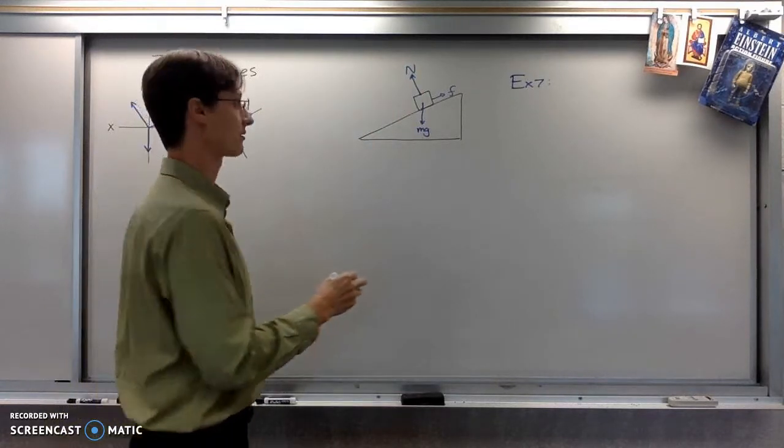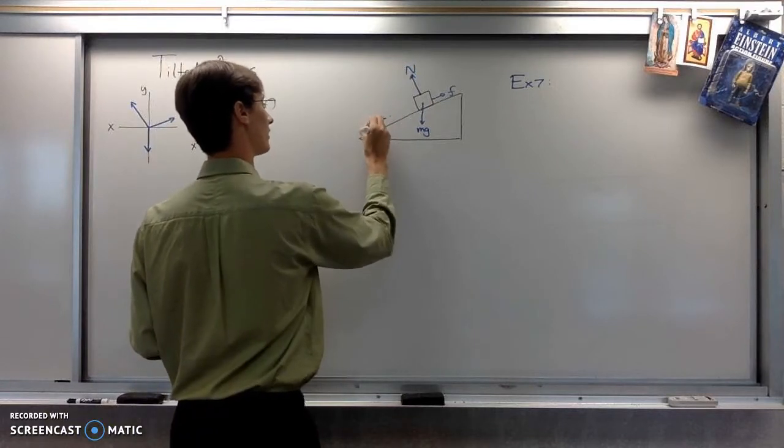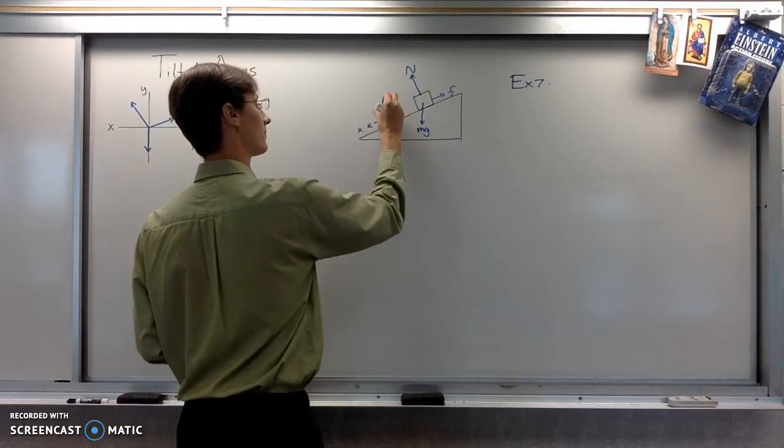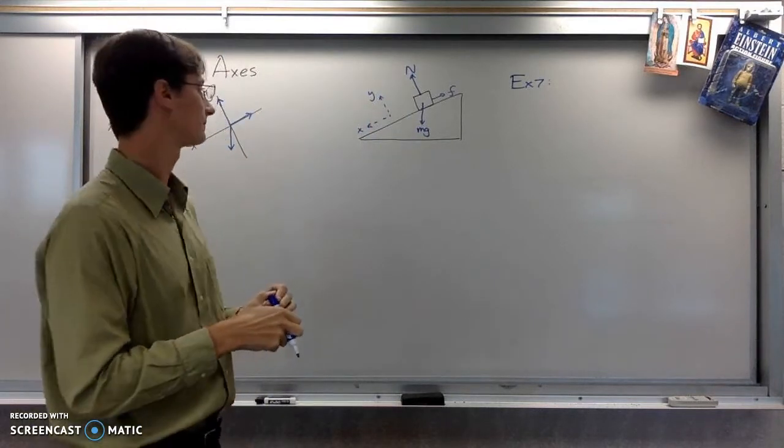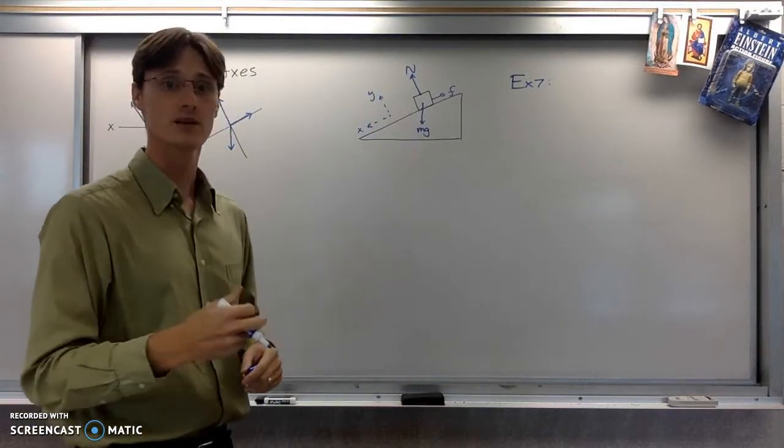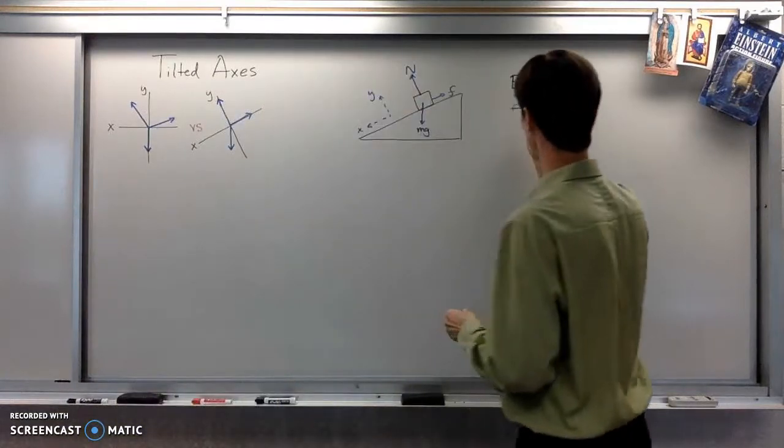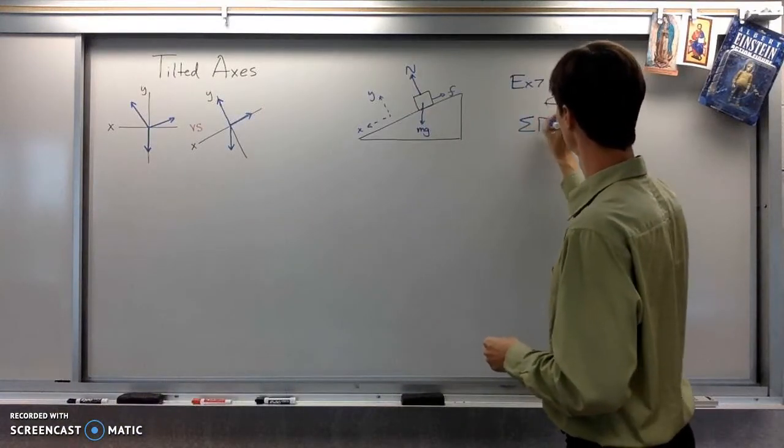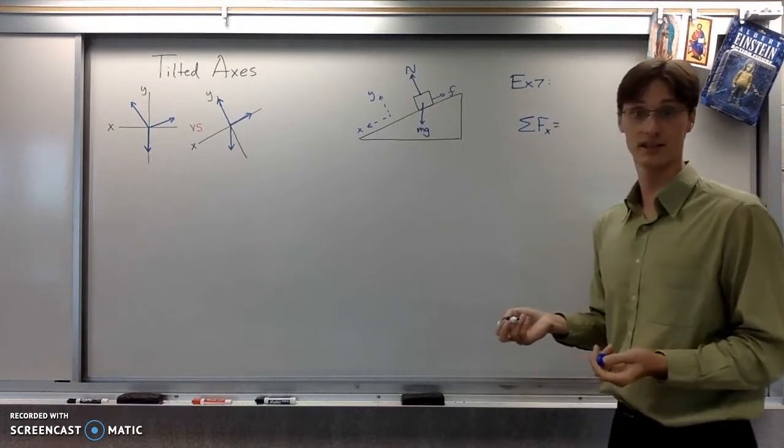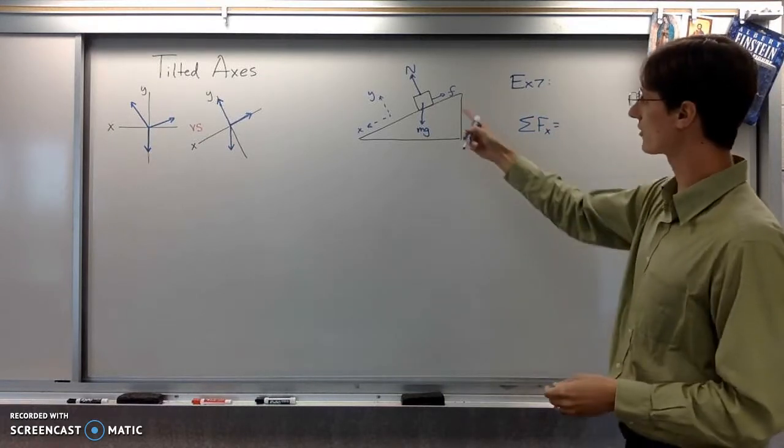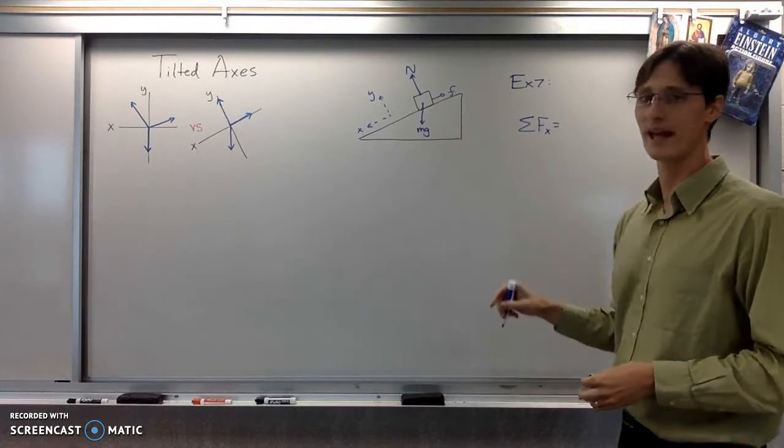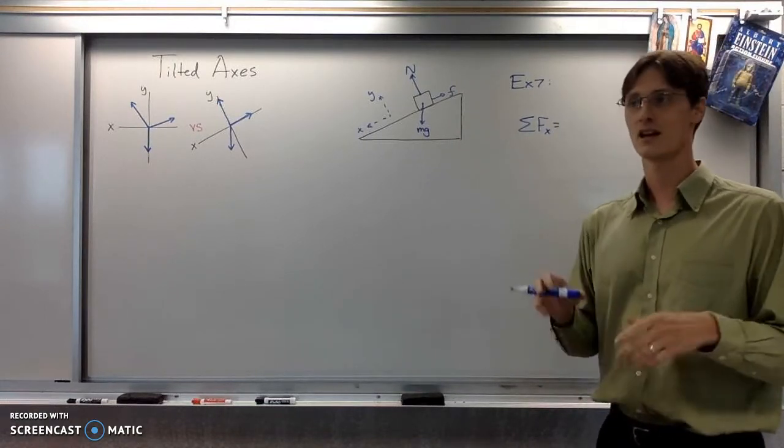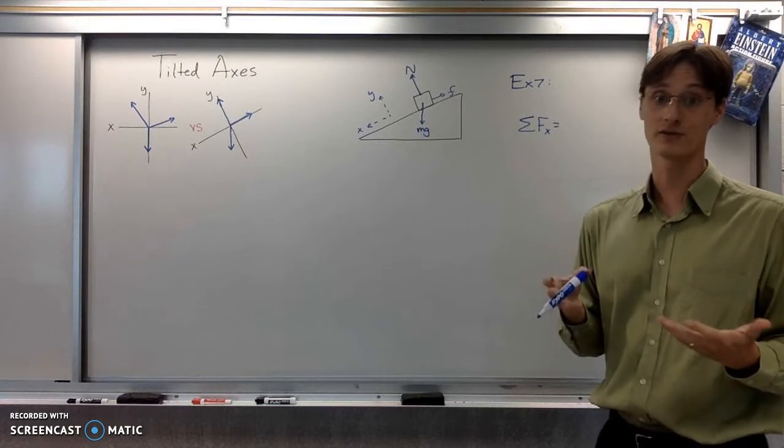The best sort of axes to use here would be ones that are parallel to motion or attempted motion, the other axis being perpendicular to that. All right, so for my x equation, with my tilted axes, if there's friction in it, it would have minus friction. And what we would have also is a component of gravity.